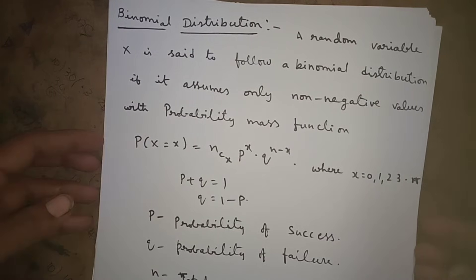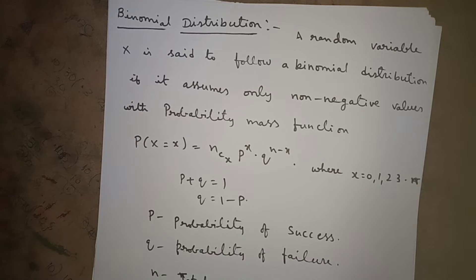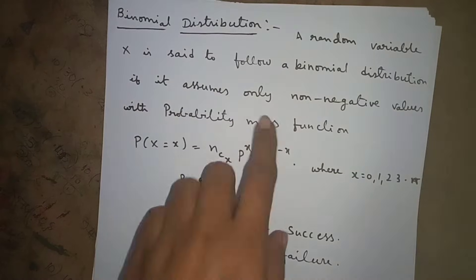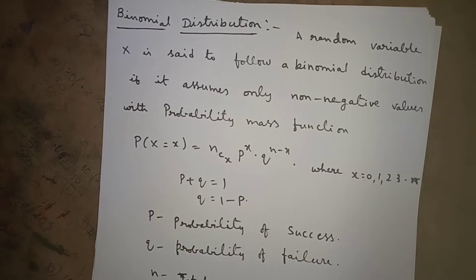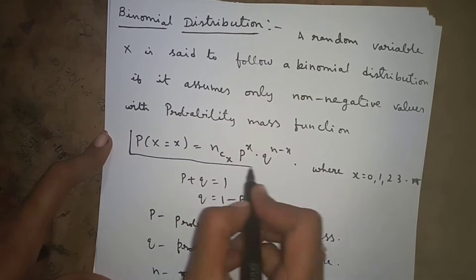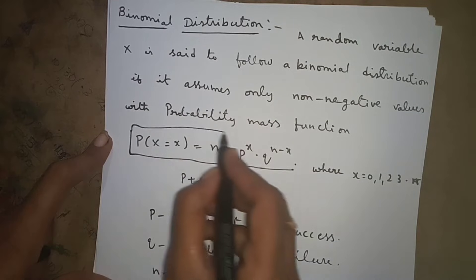Here the definition of binomial distribution: a random variable X is said to follow binomial distribution when it assumes only non-negative values with PMF — probability mass function — in the form of P(X = x) = NCX · P^x · Q^(N−x). This is the formula of binomial distribution.